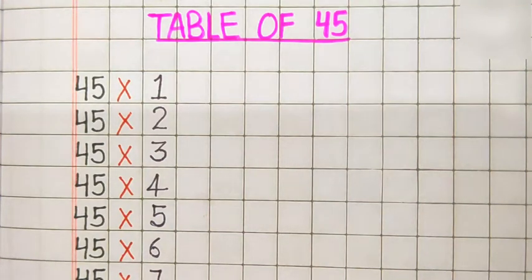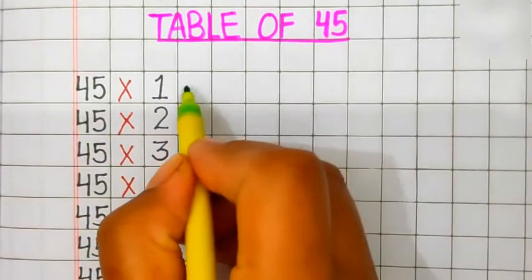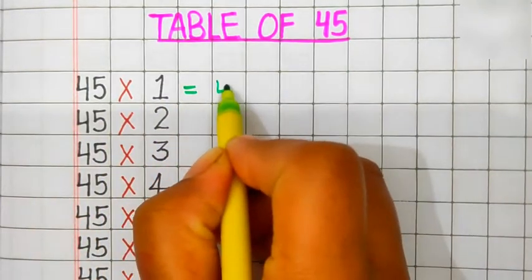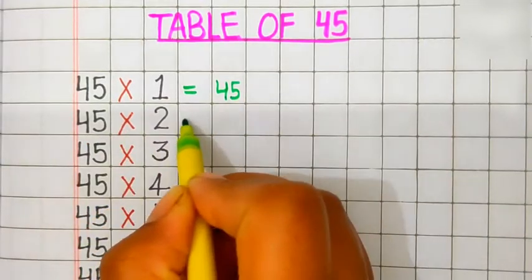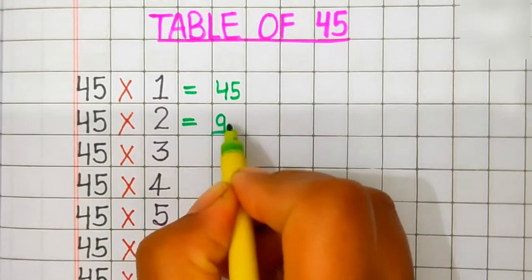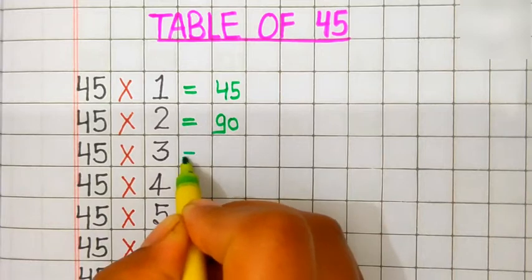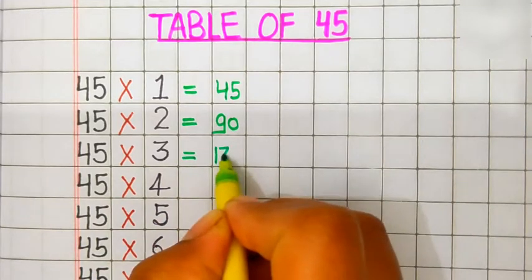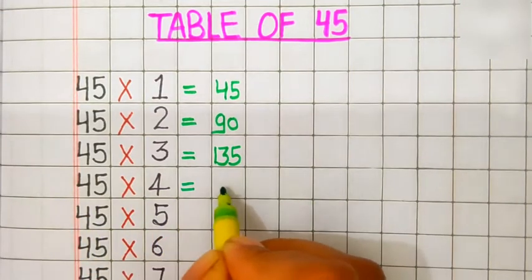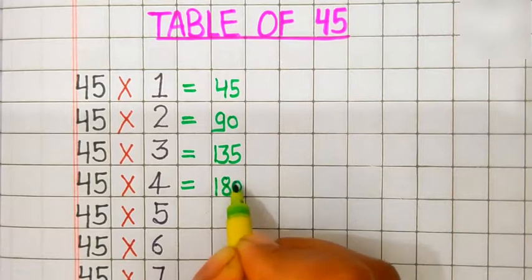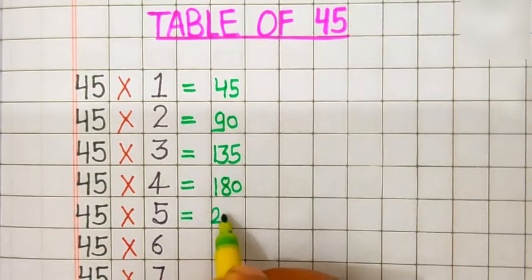Hello students, today we learn the table of 45. Let's start this video. 45 ones are 45. 45 twos are 90. 45 threes are 135. 45 fours are 180. 45 fives are 225.